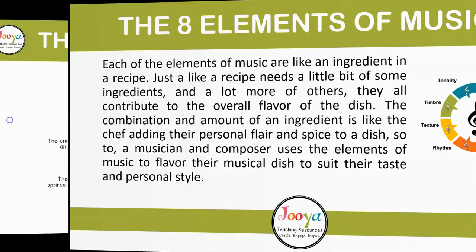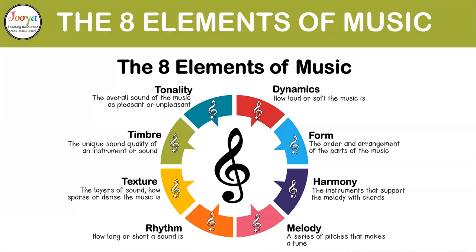A brief explanation of each of the eight elements: dynamics simply refers to how loud or soft the music is. Form is the order and arrangement of the parts of the music. Harmony is the instruments that support the melody with chords. Melody is a series of pitches that makes a tune. Rhythm is how long or short a sound is. Texture is the layers of sound, or how sparse or dense the music is. Timbre refers to the unique sound quality of an instrument or sound. And tonality is the overall sound of the music as pleasant or unpleasant.